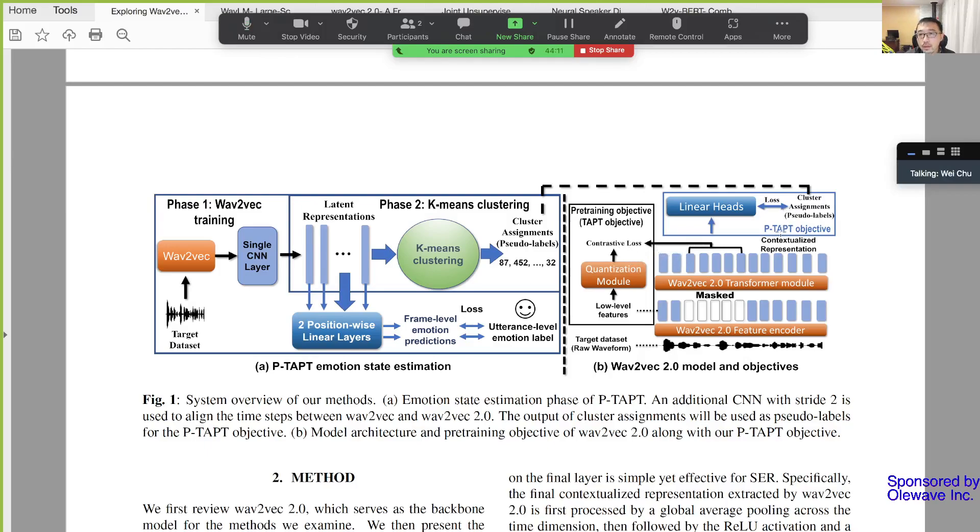So I think in their way, the contrastive loss is left untouched. They're not doing that contrastive loss. What they are doing is that for the Wav2Vec contextualized representation, they pass that through linear heads, the linear layers, and they also want to minimize the loss that is associated with the cluster assignments or pseudo-labels.